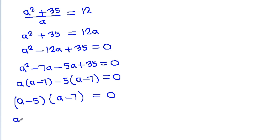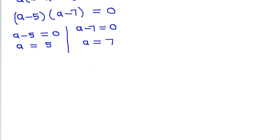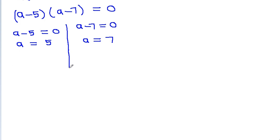So either (a minus 5) equals 0, meaning a equals 5, or (a minus 7) equals 0, meaning a equals 7.